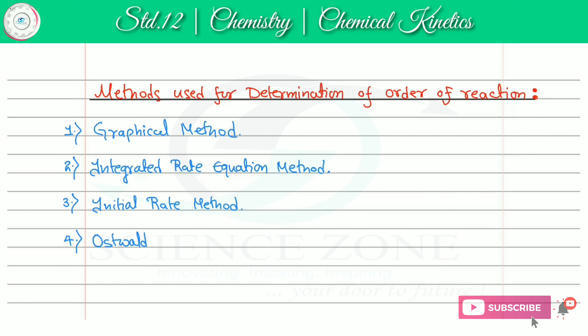The fourth method is the Oswald Isolation Method. This method is also similar to the third method, the initial rate method. In the initial rate method, we determine the order with respect to one reactant while keeping the rest of the concentrations constant. In the Oswald Isolation Method, we also calculate the order of reaction with respect to a single reactant, but for this we use the rest of the reactant concentrations in excess.